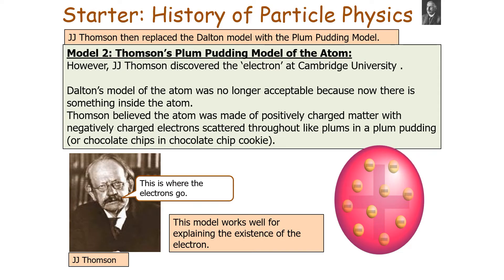With this, J.J. Thomson replaced the Dalton model with something called the plum pudding model. Because when J.J. Thomson discovered the electron, Dalton's model of the atom was no longer acceptable, as there was now something inside the atom. Thomson believed that the atom was made of positively charged matter, with negatively charged electrons scattered throughout like plums in a plum pudding.